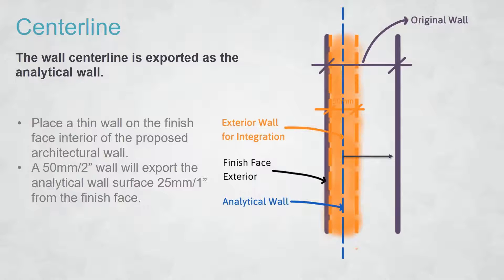It is recommended that you place the analytical line on the finished face interior of the wall. If you place it on the finished face exterior, that's incorrect — you could still do it if you want to capture thermal massing for an energy audit, but in all other cases, place it on the finished face interior, which means moving that small orange wall to the inside.